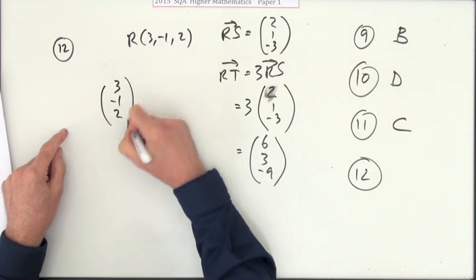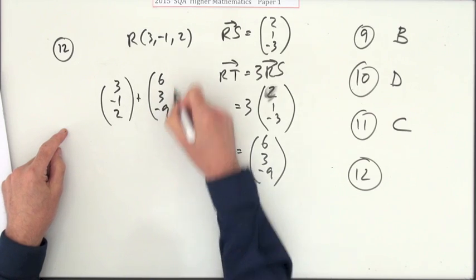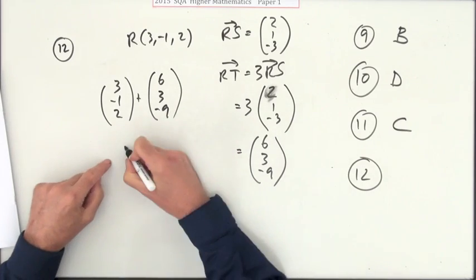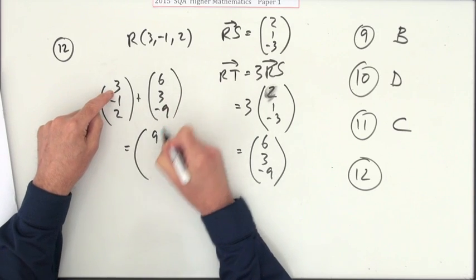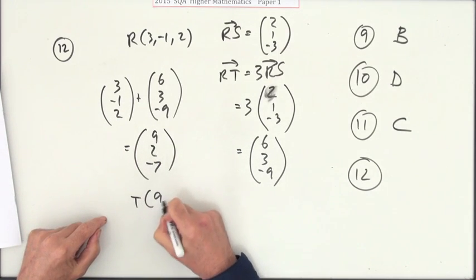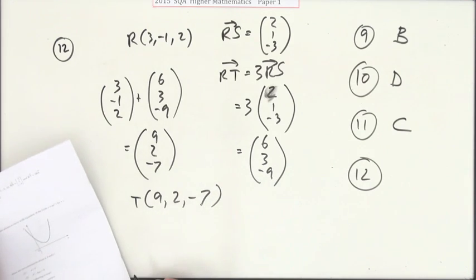So following that move, I've got (9, 2, -7) written sideways. (9, 2, -7). Where's that? (9, 2, -7) is C.